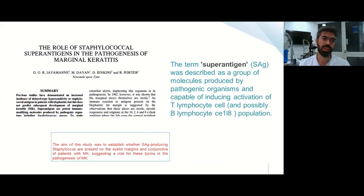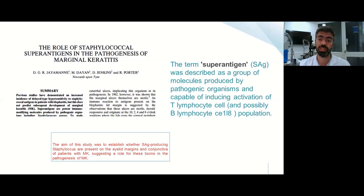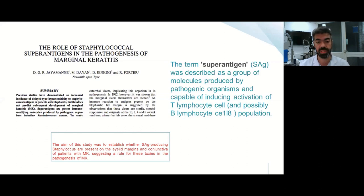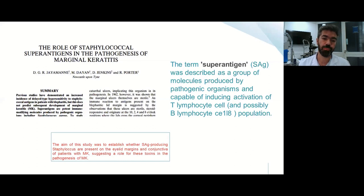There is a key paper regarding the role of superantigens in the pathogenesis of marginal keratitis. The term superantigens describes a group of molecules produced by staphylococcus capable of inducing activation of both T cells and B cells. The aim of that study was to establish whether superantigen-producing staphylococcus are present on the eyelid margins and conjunctiva. This suggests that toxins in the pathogens may have already been in contact previously, even when cultures are negative.